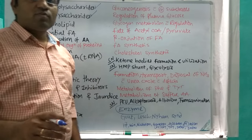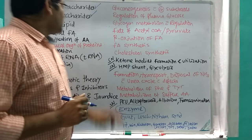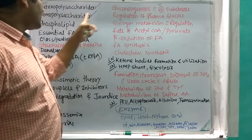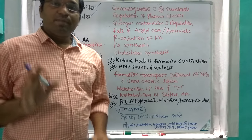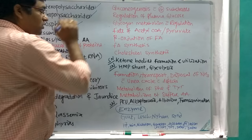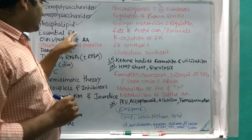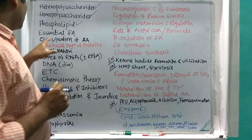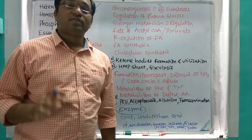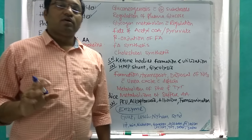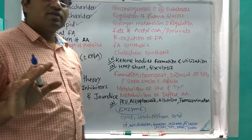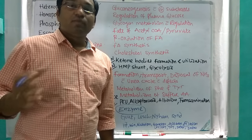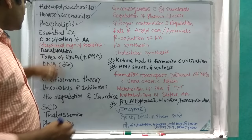In the chemistry part, there is chemistry of carbohydrates, proteins, lipids, and nucleic acids. In carbohydrate chemistry, the important questions are heteropolysaccharides followed by homopolysaccharides. In lipid chemistry, phospholipids are important — read with examples and functions. Essential fatty acids are also important with their examples and functions. In amino acid chemistry, read about the classification of amino acids — they are classified in four ways: structure-wise, polarity, essentiality, and metabolic classification. This is an important LAQ.